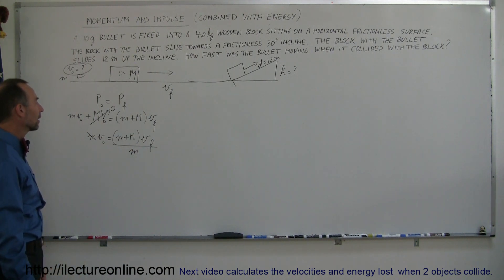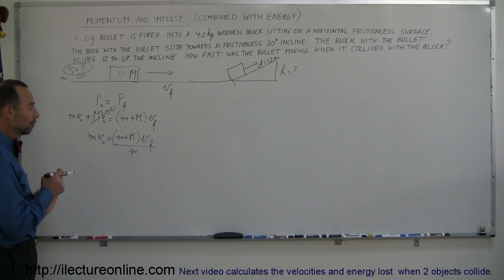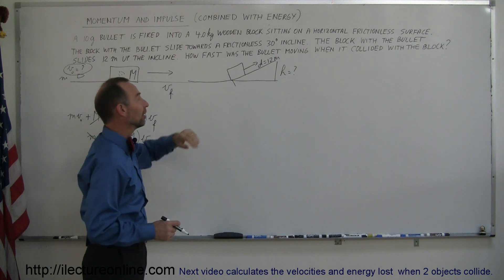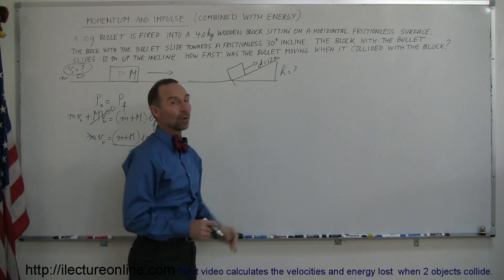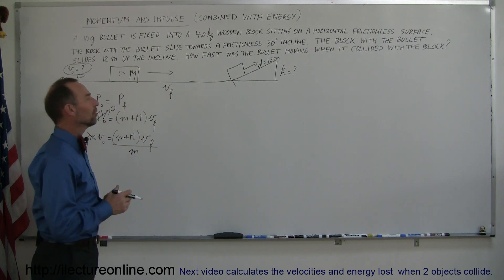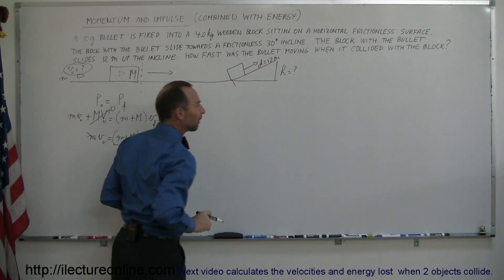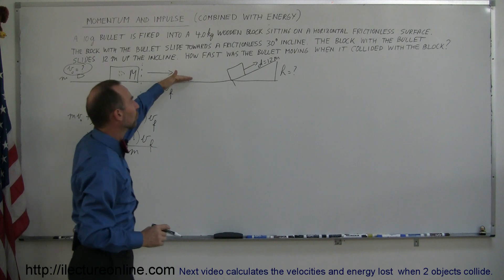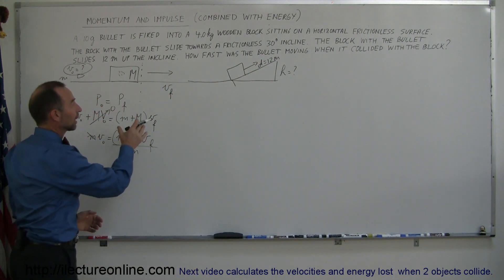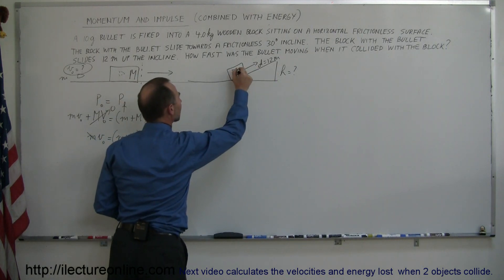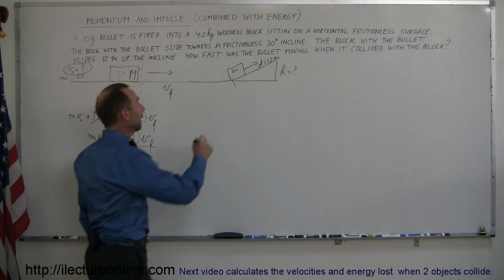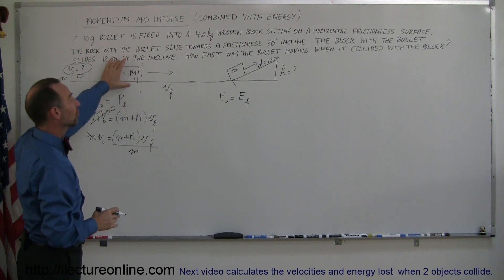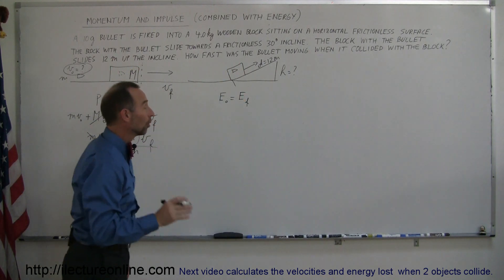We don't know the final velocity of the block and bullet, but they give us a hint: the block keeps sliding on the frictionless surface until it reaches an incline, goes up 12 meters, then comes to a stop. After the collision we have a conservation of energy problem — the initial kinetic energy as it slides along the flat portion turns into potential energy as it goes up the hill, until all kinetic energy is converted to potential energy and the block and bullet stop.